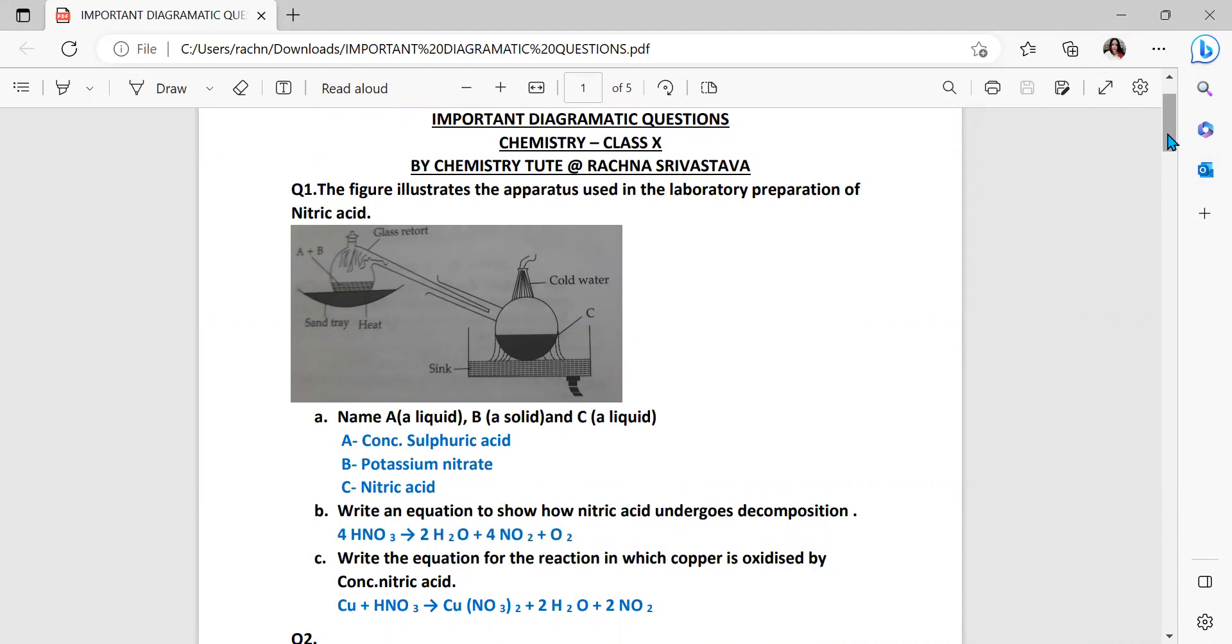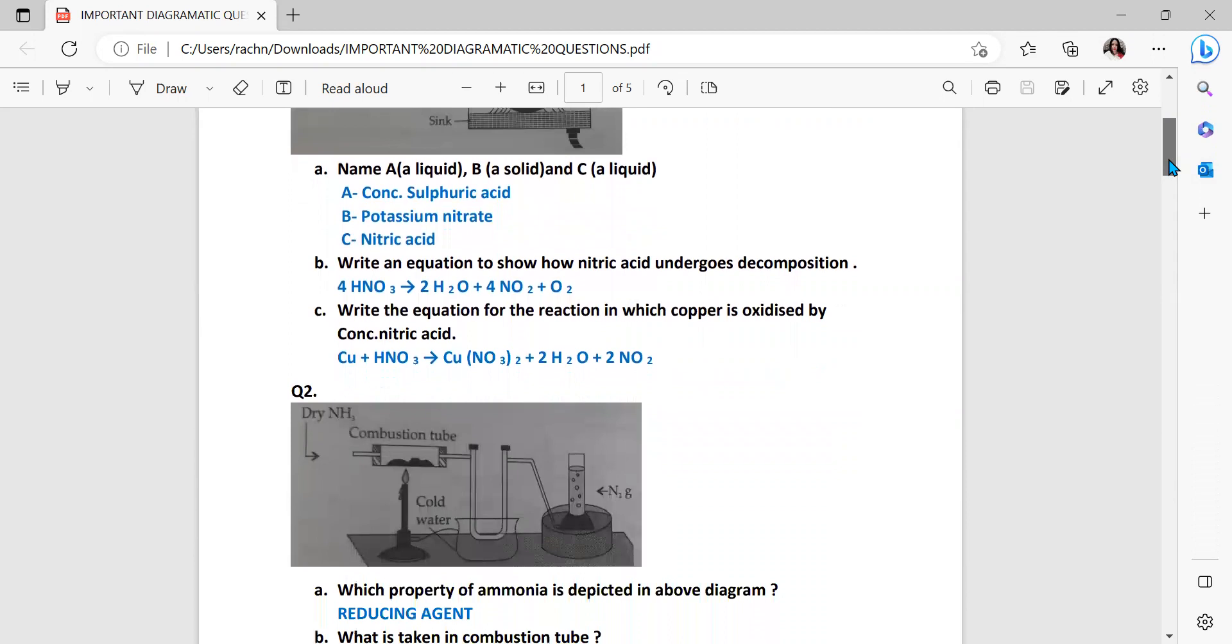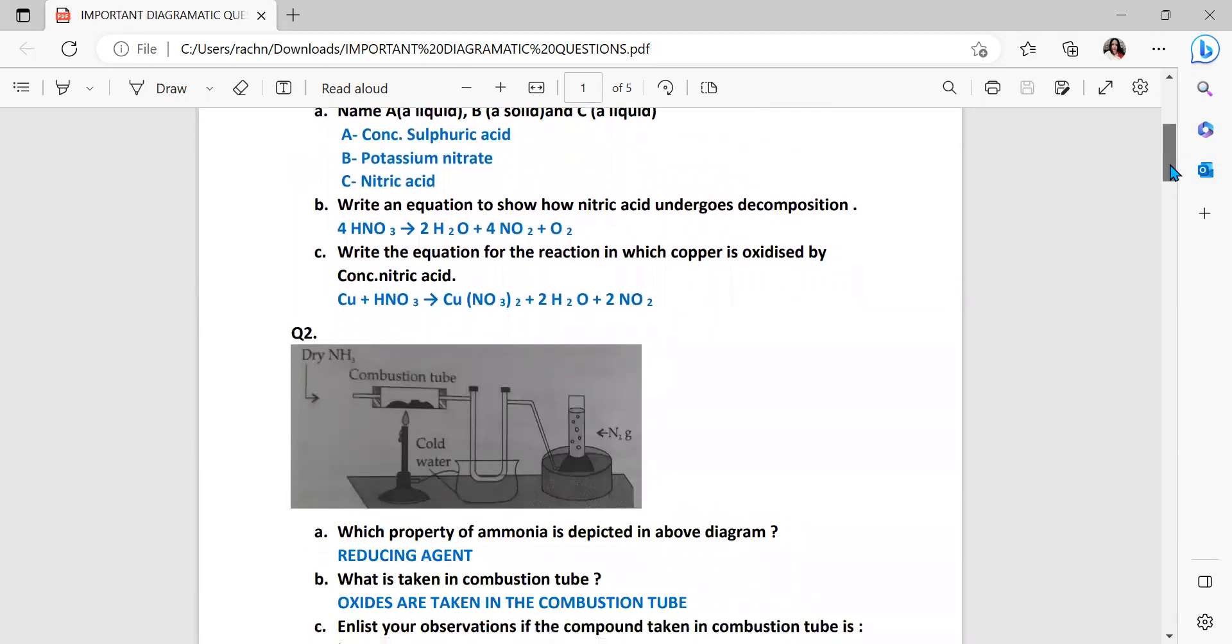Question says name A, B, and C. Here it is saying name, so please children don't write the formula. Whatever has been asked, read the question carefully. Your A is concentrated sulfuric acid, B is potassium nitrate, and C is nitric acid. Part B, write an equation to show how nitric acid undergoes decomposition. Your nitric acid decomposes forming water, nitrogen dioxide, oxygen. Please do balance the equations.